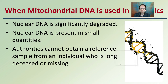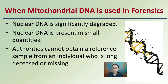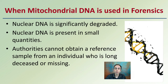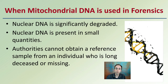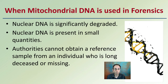So when is mitochondrial DNA used in forensics? Well, if nuclear DNA has been significantly degraded, this is where we could look at finding, sequencing, and analyzing mitochondrial DNA. Also, if the nuclear DNA is present in small quantities, that would lead us to go to the mitochondrial route. Authorities cannot obtain a reference sample from an individual who is long-deceased or missing — these are conditions where mitochondrial DNA might come into play.